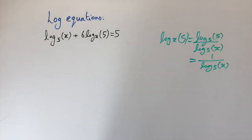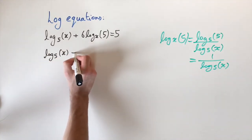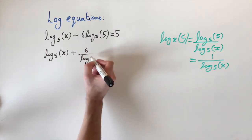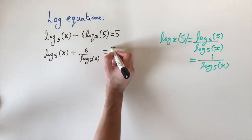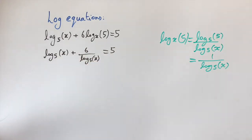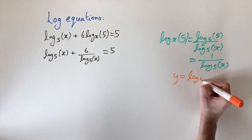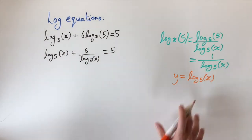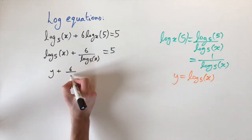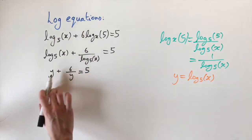Substituting back in, we get log base 5 of x plus 6 divided by log base 5 of x, and this equals 5. Both logarithms are the same, so we use a substitution: let y equal log base 5 of x. Then everything becomes y plus 6 divided by y equals 5, which is much nicer.